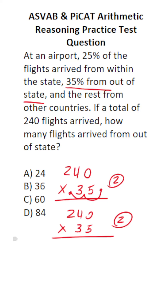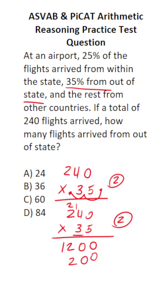Zero times five is zero. Four times five is 20, so bring down a zero and carry a two. Two times five is 10, plus two is 12. Before we start multiplication with that three, add a zero placeholder. Three times zero is zero. Four times three is 12, so bring down a two and carry a one. Two times three is six, plus one is seven.